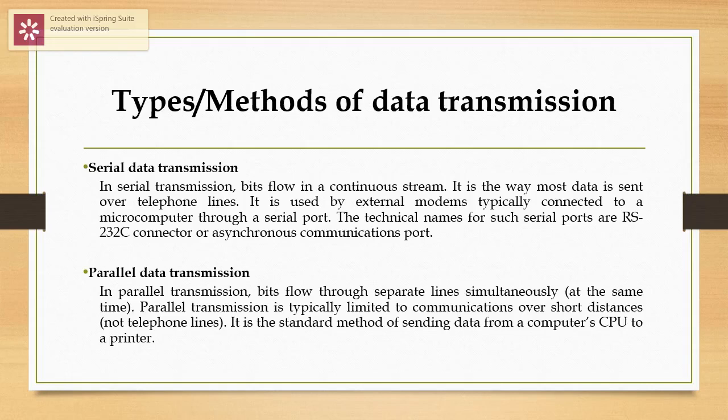The second is parallel data transmission. In parallel transmission, bits flow through separate lines simultaneously, that is, at the same time. Parallel transmission is typically limited to communications over short distances. It is the standard method of sending data from a computer CPU to a printer.